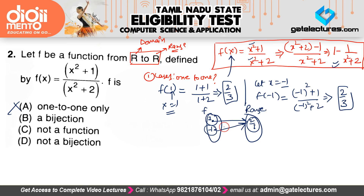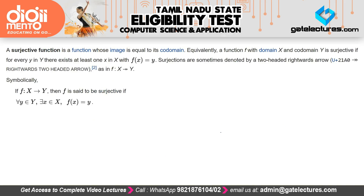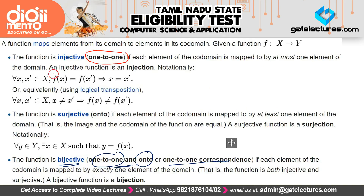Now let us check whether the function is bijective. A bijective function must be both one-to-one (injective) and onto (surjective). Injective means one-to-one; surjective means onto. For a function to be bijective, both conditions must be satisfied.